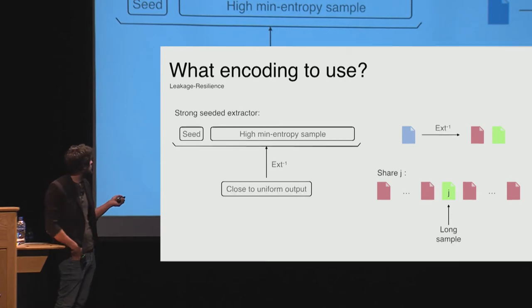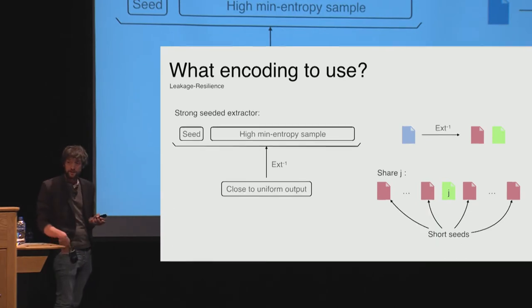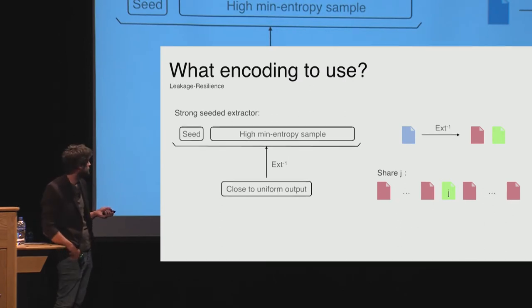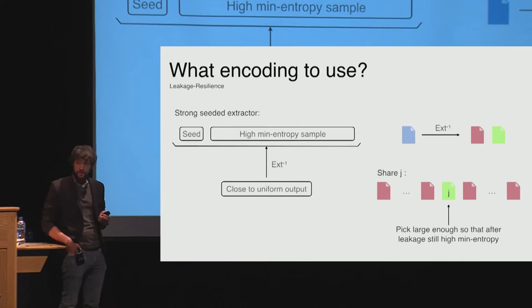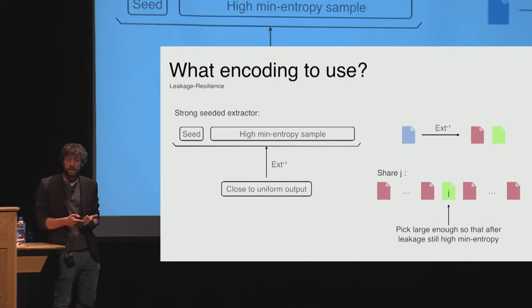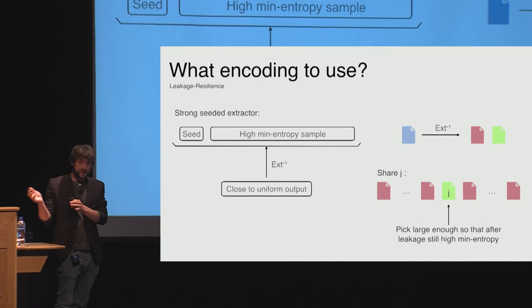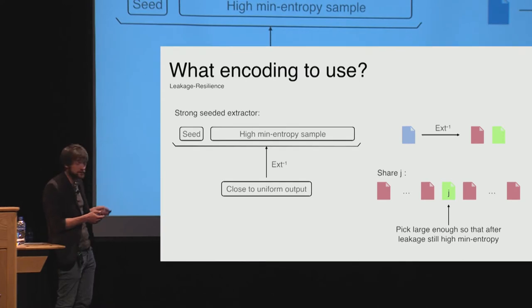To encode one of the original secret shares, we apply the inverse of the extractor to obtain two things: a seed and a high min-entropy sample. The j-th party's new share consists of a bunch of the red seeds from others and one green high-entropy sample. The intuition is that even if the adversary leaks pretty much all of the red shares, the green share is only held by one party. Since the green part is a high min-entropy sample, even after leaking some of its bits there's still a lot of entropy left, so the adversary cannot extract the secret by the properties of the extractor.